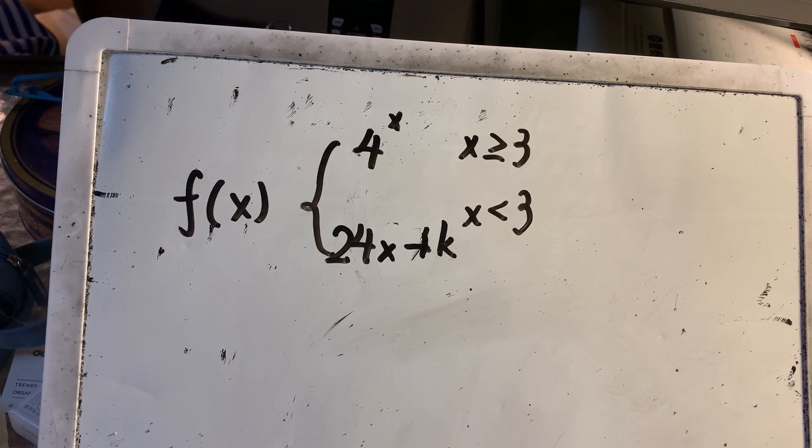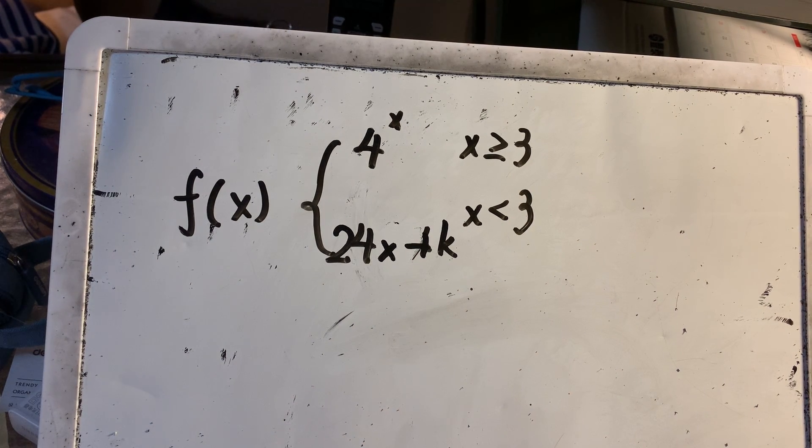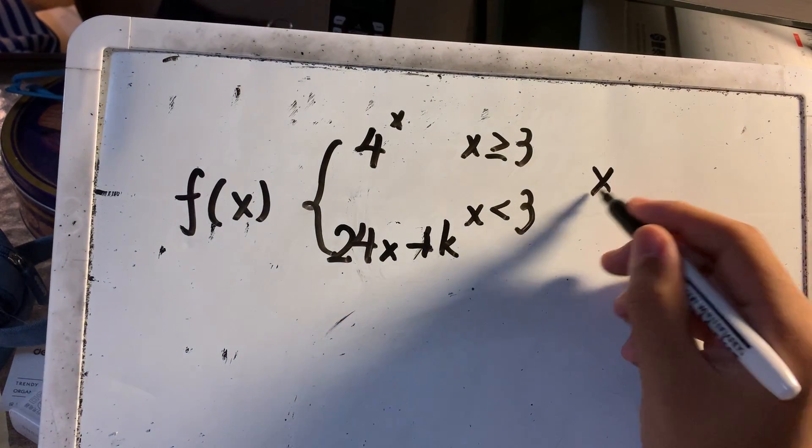Let f(x) be the piecewise function defined like this. Find the value of k such that f(x) is continuous at x equals 3.